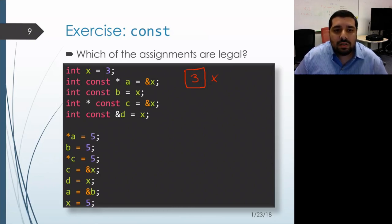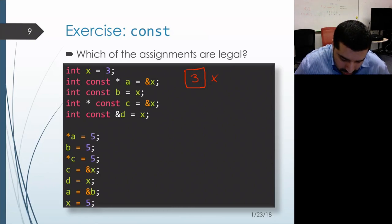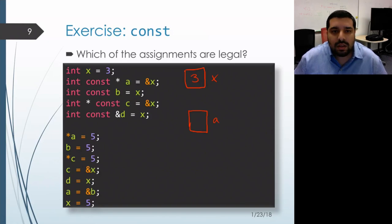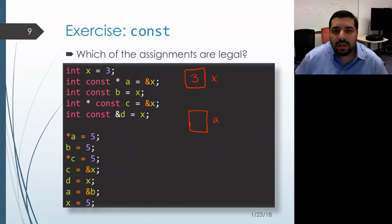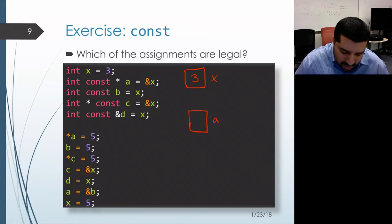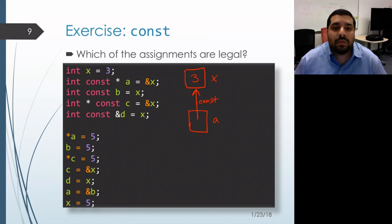Then on the next line, we declare a variable a, and we get an object in memory associated with that name. We've declared it as a pointer to const, which means that the pointer object itself isn't const, but the object that it's pointing at won't be modifiable through this pointer. So we initialize it with the address of x, and we'll write down const next to that arrow to indicate we're not allowed to modify that object through the pointer a.